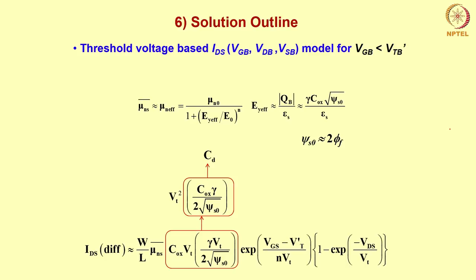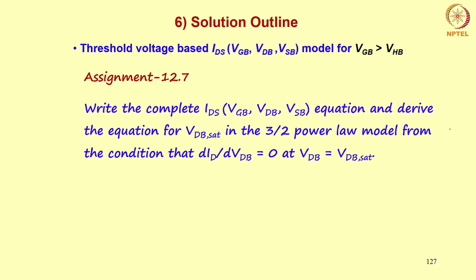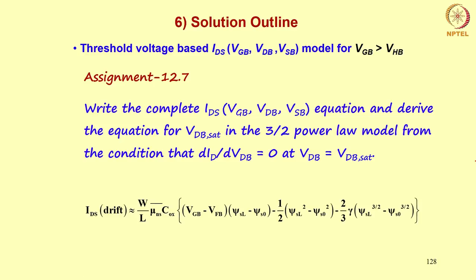The assignment is: write the complete IDS expression as a function of Vgb, Vdb, and Vsb, and derive the equation for the saturation drain-to-bulk voltage Vdb_sat in the 3/2-power-law model from the condition dI/dVdb = 0 at Vdb = Vdb_sat. This is the surface-potential-based 3/2-power-law model expression, where the 3/2-power-law terms are highlighted.